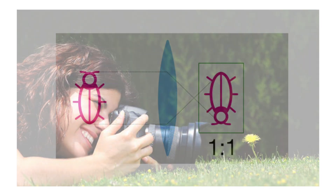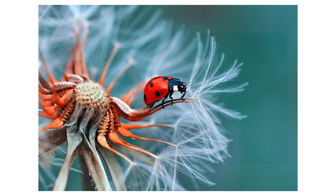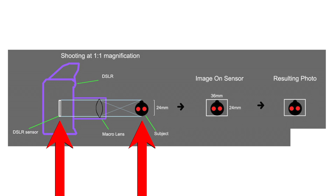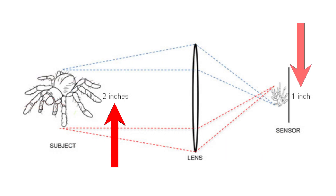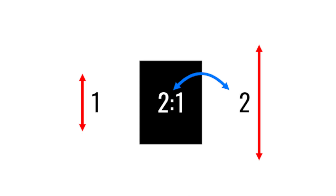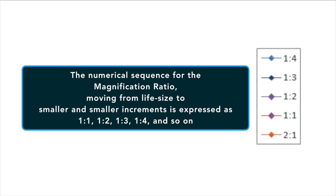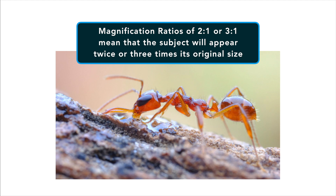The classic definition of a macro lens is one that has a maximum magnification ratio of at least 1 to 1, or 1x in lens specifications. This means that a subject can be reproduced at full size on the camera's image sensor — a 1.5 inch object can be projected onto the sensor as a 1.5 inch image when the lens is sufficiently close to the subject. A maximum magnification ratio of 1 to 2, or 0.5x, would mean that the maximum size of an image could be projected onto the sensor at just half its true size. A 2 to 1 ratio means that the subject captured will be twice its size. The numerical sequencing moving from life size to smaller increments is expressed as 1:1, 1:2, 1:3, 1:4 and so on.